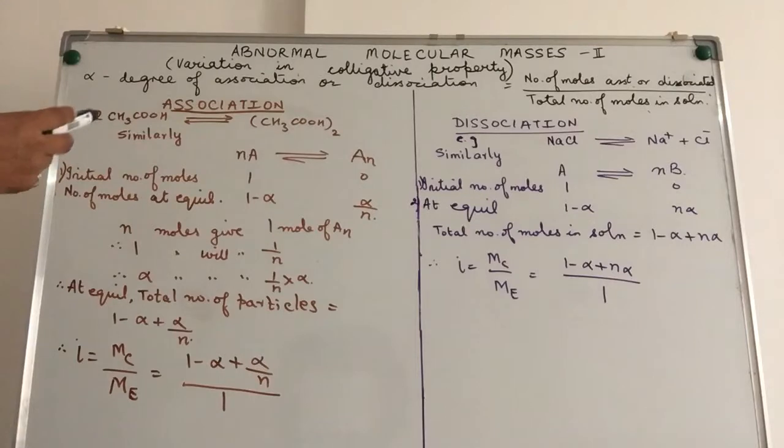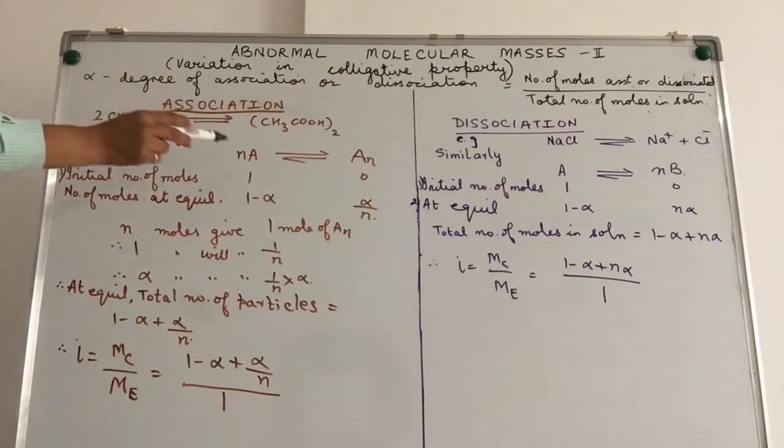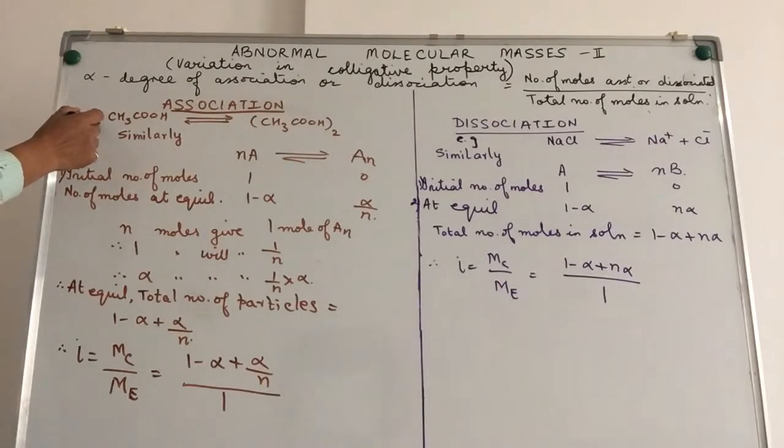We are taking the first aspect that is association. A very simple example of it, we have done CH3COOH associating to form dimer. You can have many other examples. This is the simplest that I am taking so that you are able to relate to it, you are able to connect to it. Once the foundation is good enough, then you can go ahead with even difficult and more complicated compounds and numericals and problems. And in that case, they no longer remain a problem.